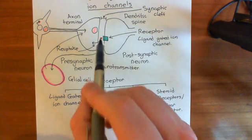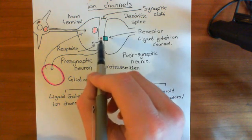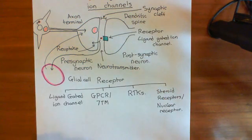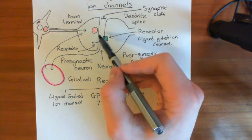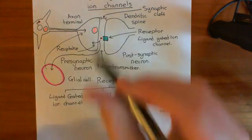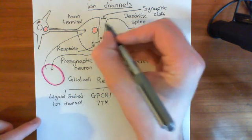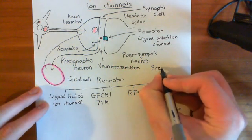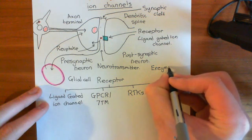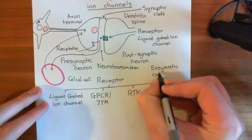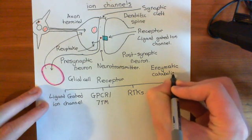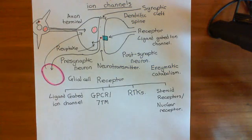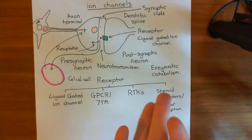In some cases, such as acetylcholine, you can actually have degradation of the neurotransmitter molecule. There are enzymes known as acetylcholinesterases which break down acetylcholine, and they're present in the synaptic cleft — those will terminate the signal also. So you can have enzymatic catabolism — catabolism meaning to break things down — or enzymatic inactivation of the neurotransmitter molecule by enzymes.